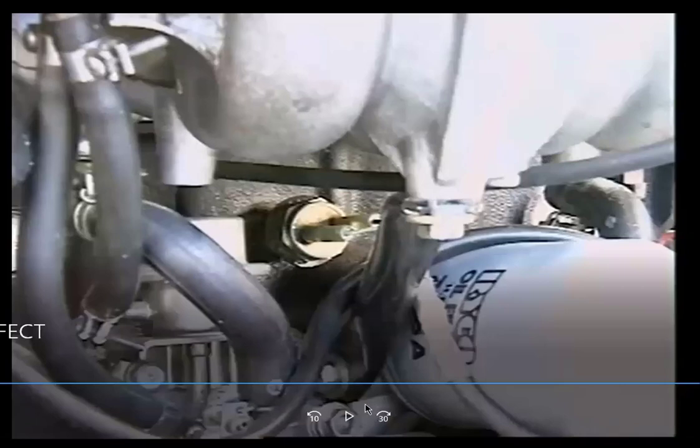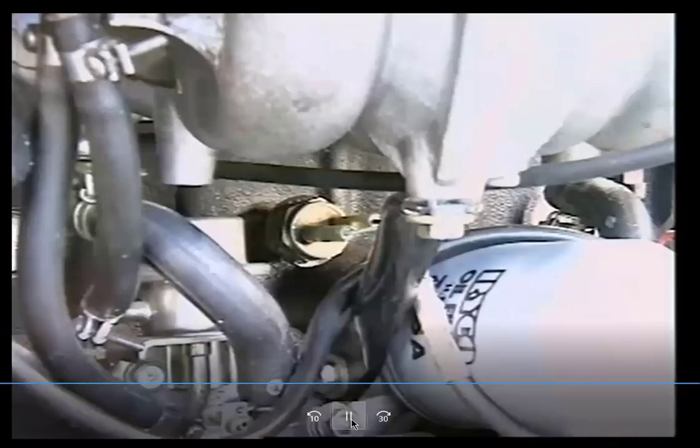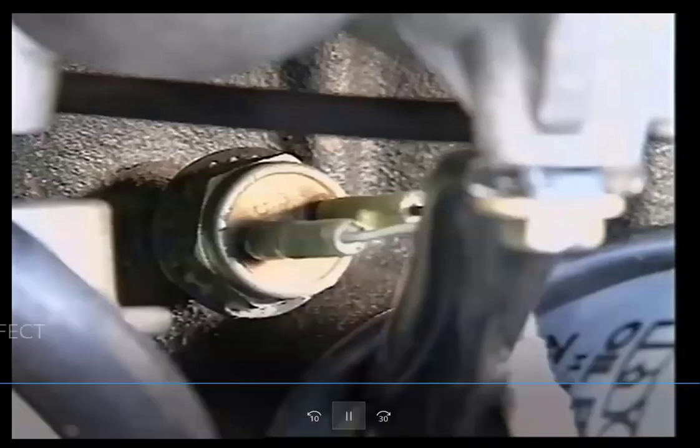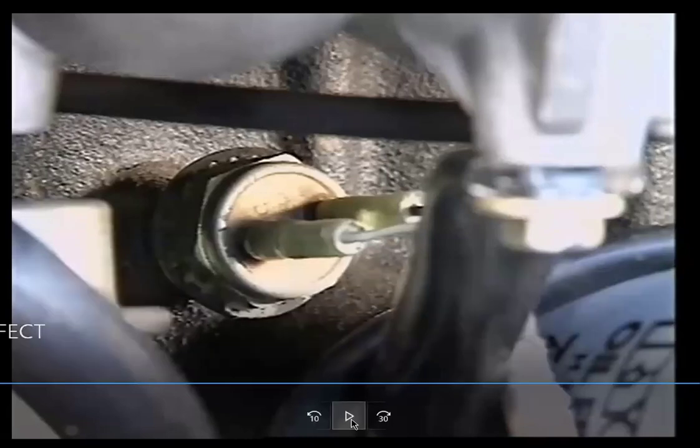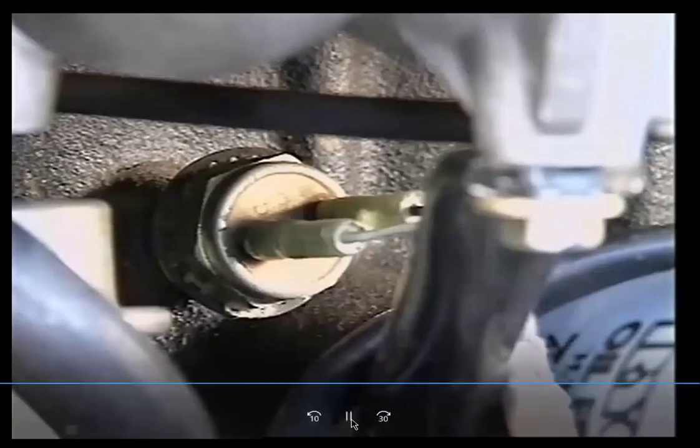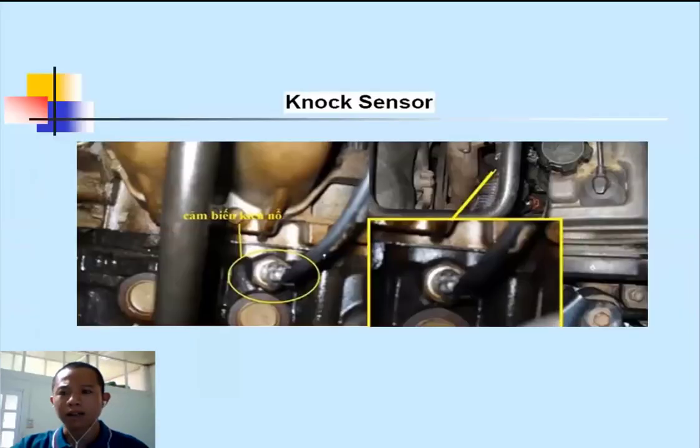The ECU uses knock sensors to detect detonation and retards ignition timing to stop it. The knock sensor is used to monitor engine knock, then sends signals to the control system to retard ignition timing and stop the knocking condition, protecting the engine.